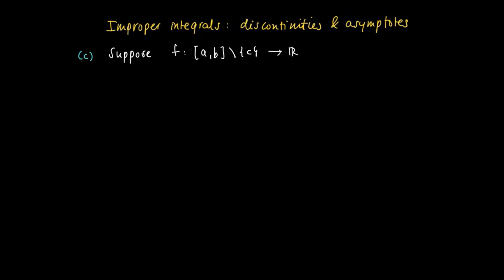So suppose we have a function for which this is the case. We have at c a discontinuity or a vertical asymptote in the middle of the interval a, b. Then if we know that the integrals a to c f(x) dx and the other improper integral c to b f(x) dx, when these exist...